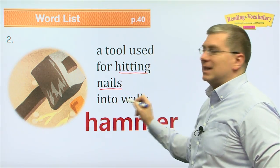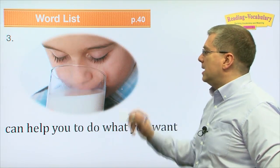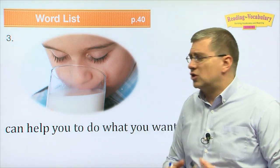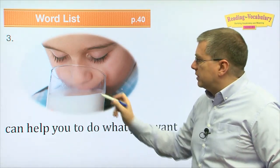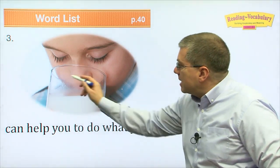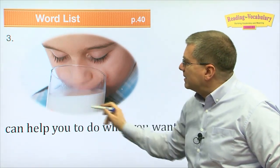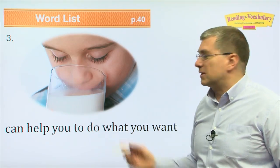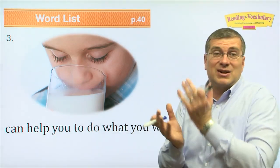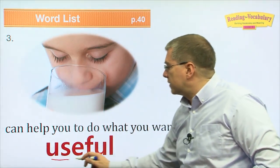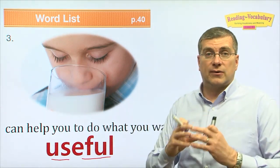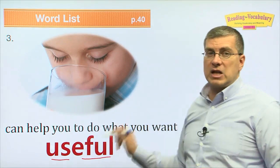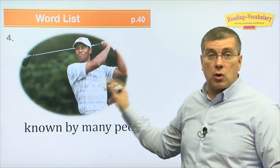Number three: something that can help you do what you want. This child wants to drink milk and needs something to help them — the glass. Without the glass, trying to drink milk is very sloppy, very messy. So the glass is useful. A tool is useful — it can help us do what we want to do.